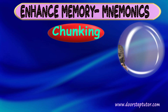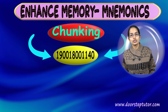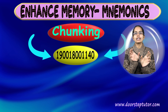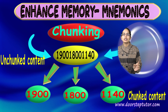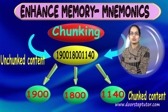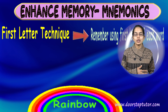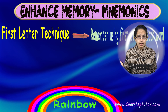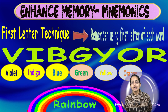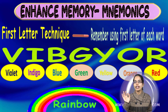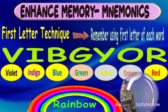Chunking implies grouping numbers or words together — for example, 1900, 1800, 1140 can be broken into groups of four: 1900, 1100, and so on. You chunk and group them into smaller units and then remember those. The first letter technique is well illustrated by remembering the colors of the rainbow: VIBGYOR — Violet, Indigo, Blue, Green, Yellow, Orange, and Red. The first letter of each color — V for Violet, I for Indigo, B for Blue, and so on — is what makes up the first letter technique.